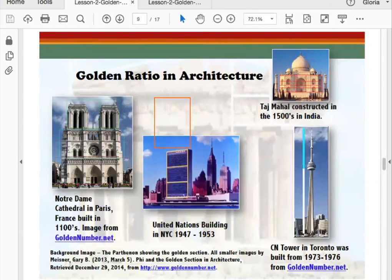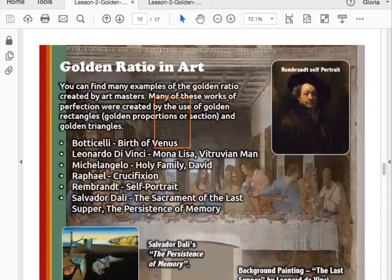The golden ratio in art - you can find many examples of the golden ratio created by art masters. These works of perfection were created by the use of golden rectangles, golden proportions or section, and golden triangles. A painting called The Birth of Venus created by Botticelli is within the golden ratio. We talked about Leonardo's Mona Lisa, which is within the golden ratio, and the Vitruvian Man. Michelangelo's Holy Family, David, Raphael's Crucifixion, Rembrandt's Self-Portrait.